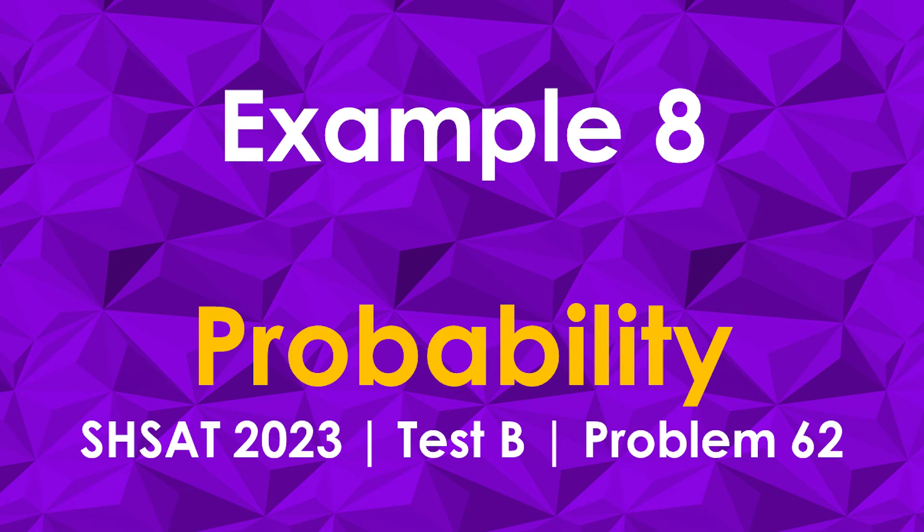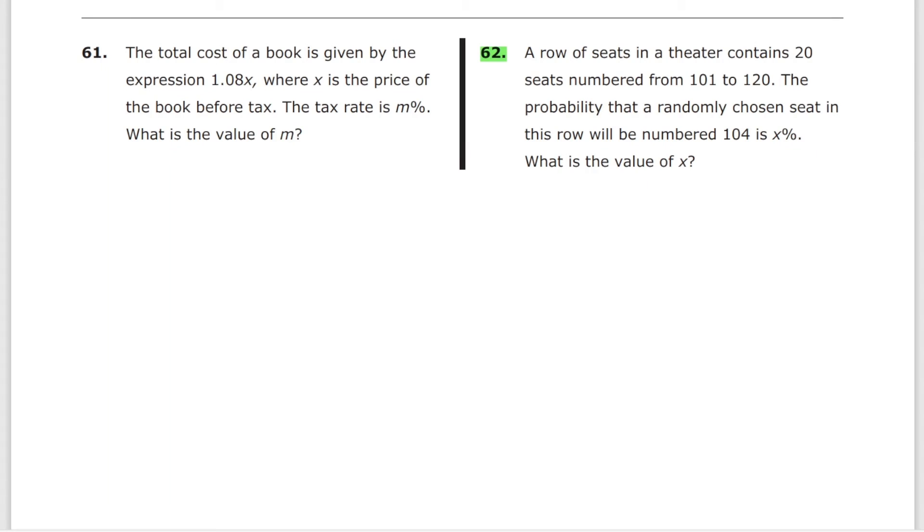Problem 62 from test B. A row of seats in a theater contains 20 seats numbered from 101 to 120. This is, to be honest, pretty irrelevant information. The probability that a randomly chosen seat in this row will be numbered 104 is x percent. What is the value of x? What's the probability? How many options do you have for the seat to be 104? One option. How many total options do you have? 20. So that's equal to 1 out of 20. Let's convert this into percentages. It's 1 out of 20. Multiply this by 5 over 5, which is essentially 5 out of 100, or 5 percent. Hence, x is equal to 5.